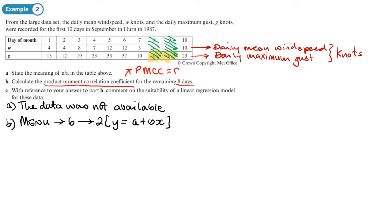Y equals a plus bx just means it's linear. And then we're just going to type in information from the table. So I'll type in the x values first, they basically represent the w's from my table. So 4, 4, 8, 7, 12, 12, 3, and 10.